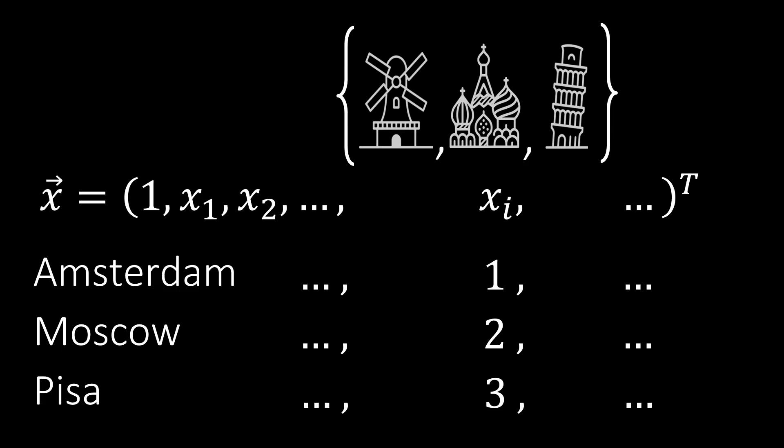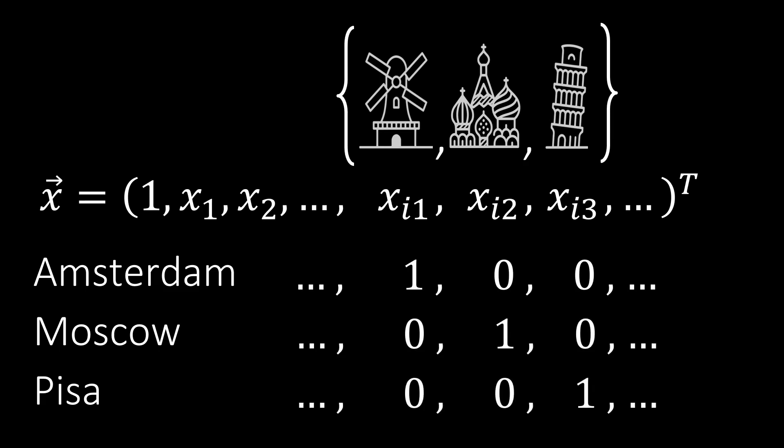Instead, we add one input feature for each element in the set. In the given example with three cities, we therefore add three input features. We can then represent each of the choices by setting the corresponding feature to 1 and the others of the set to 0. So Amsterdam would be represented as 1, 0, 0, Moscow as 0, 1, 0, and Pisa as 0, 0, 1. This is what is called a one-hot encoding.